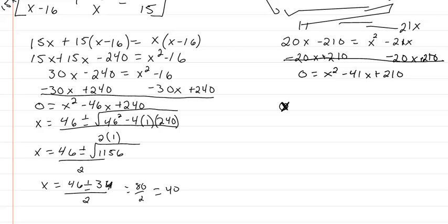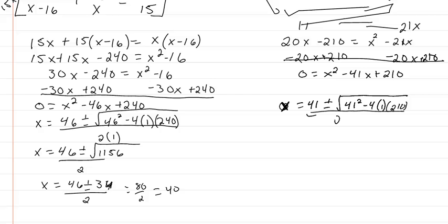Using the quadratic formula with a equals 1, b equals negative 41, and c equals 210, we get x equals 41 plus or minus the square root of 841, all over 2.